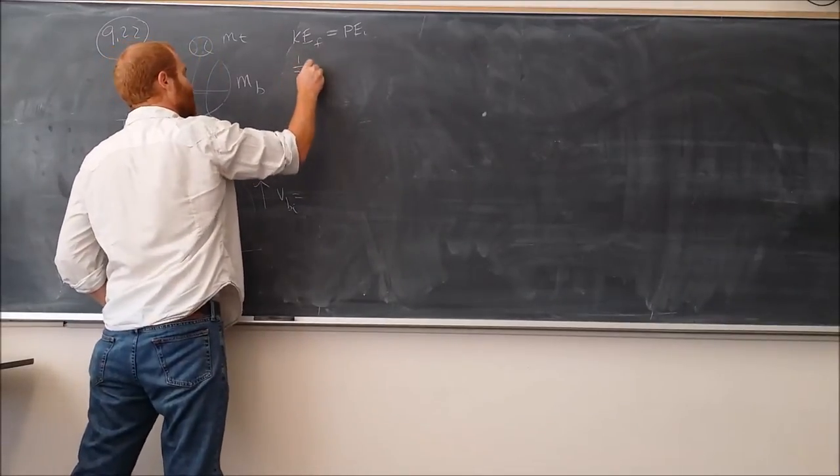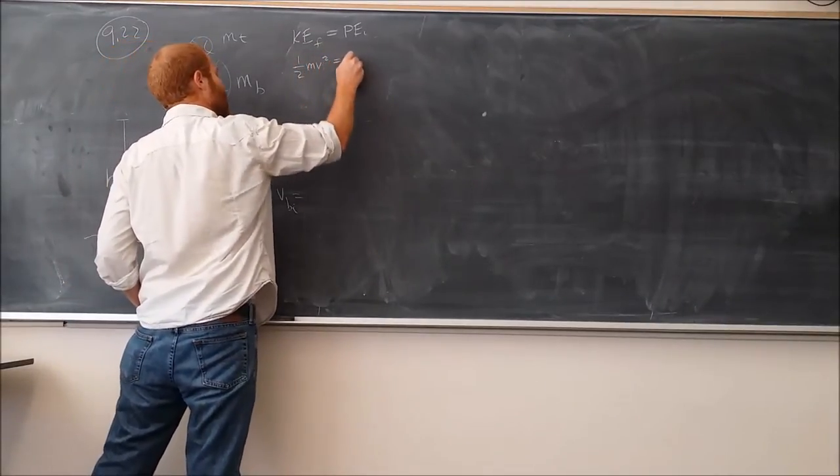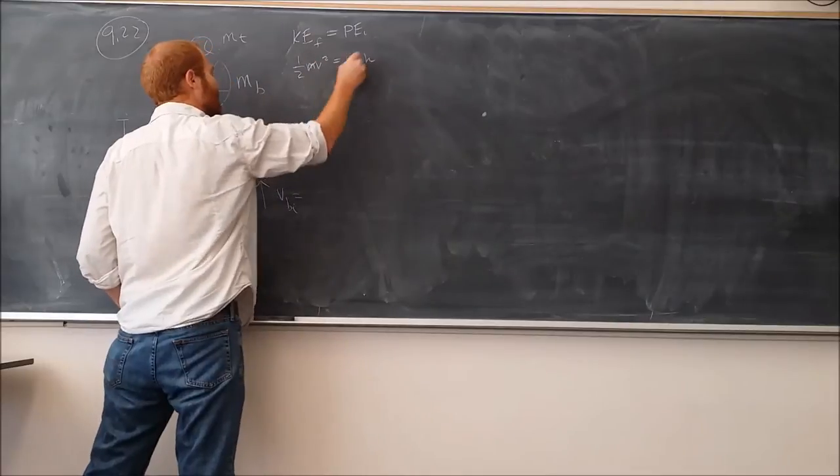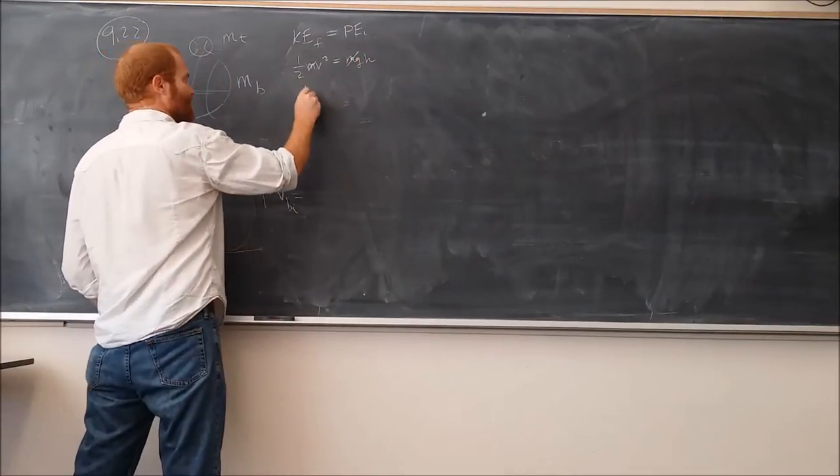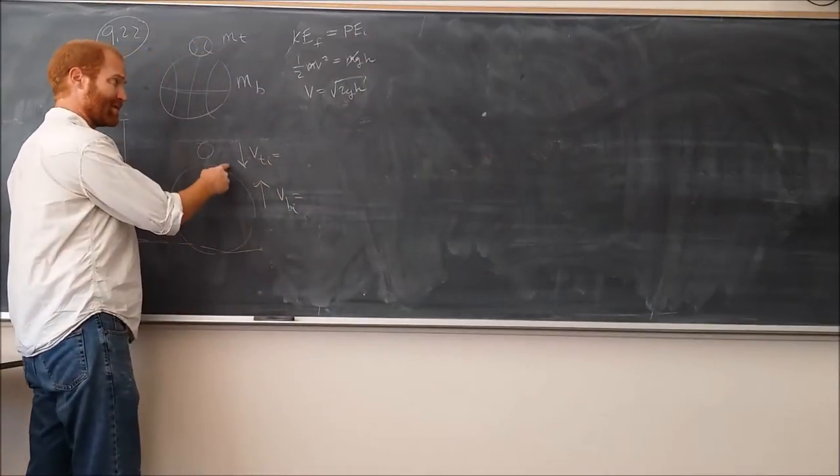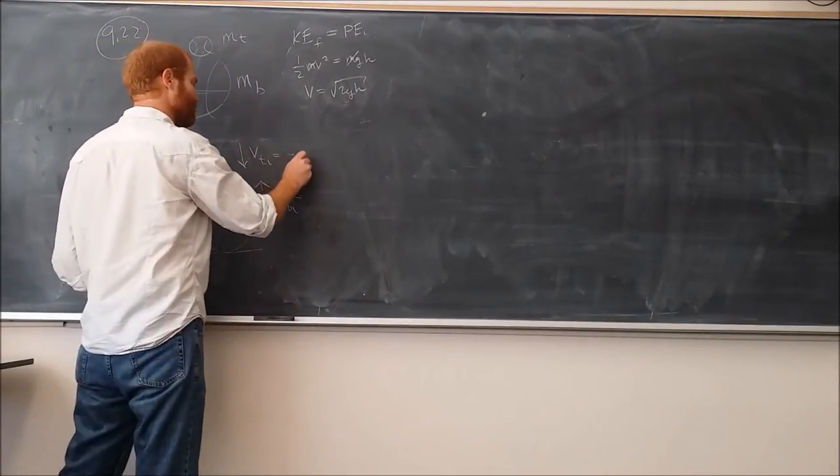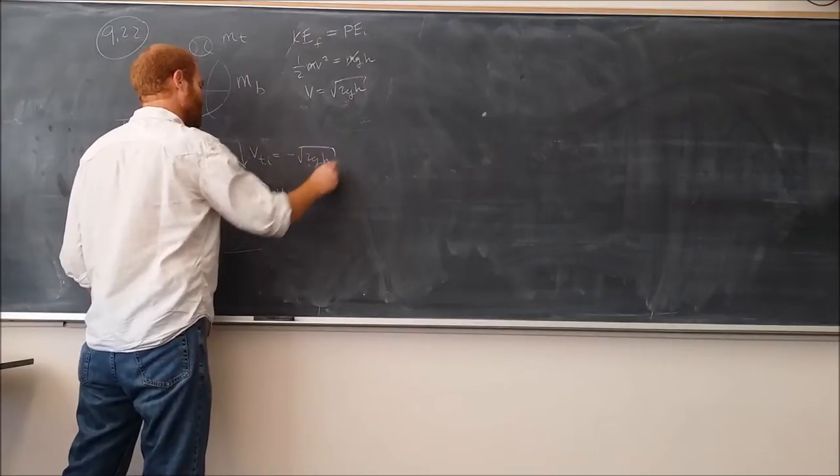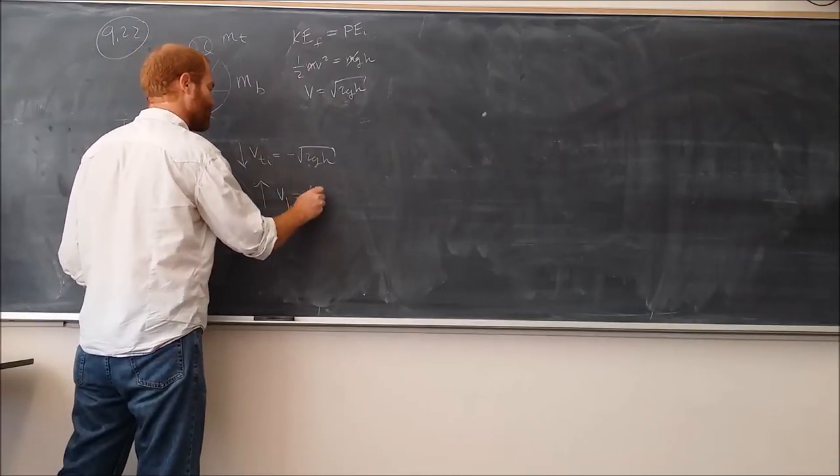So here we'll have 1/2 MB VB squared equals mgh. The masses cancel. The velocity then is going to be given by the square root of 2gh. I'm going to call the velocity of the tennis ball, since it's pointing down, negative root 2gh, and the velocity of the basketball, because it's pointing up, the square root of 2gh.